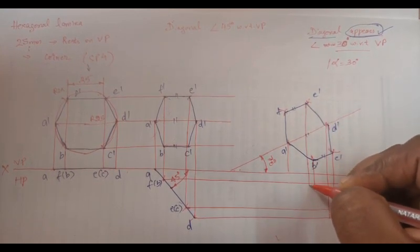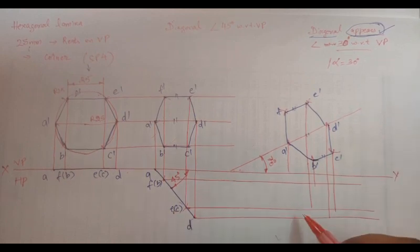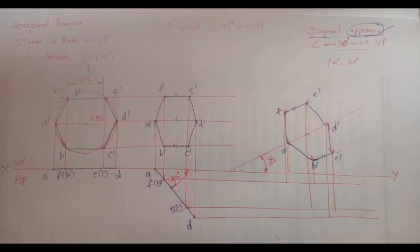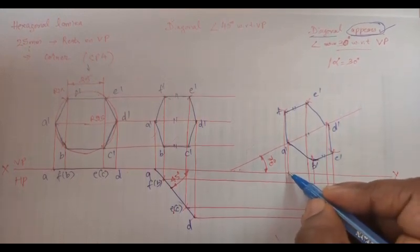So we are going to write the annotations. This point is A, B, C, D, E, F.